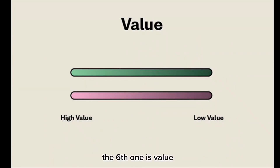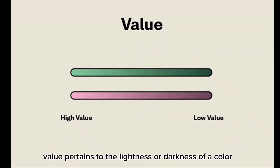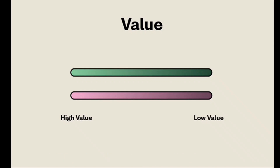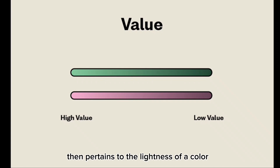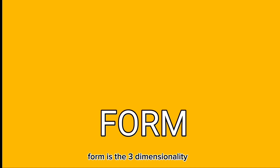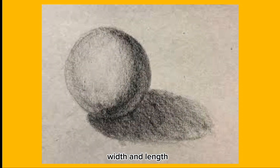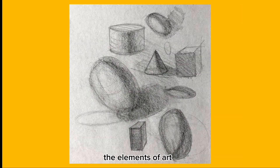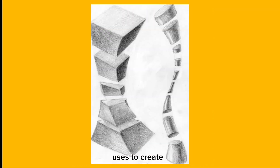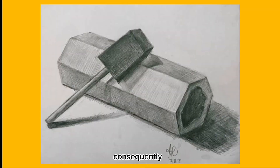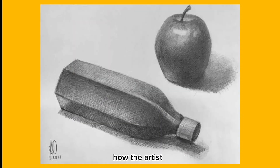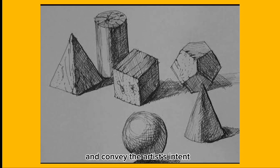The sixth element is value, which pertains to the lightness or darkness of a color in a given artwork. Value can be changed by adding white or black to a color, described as tint and shade respectively. The seventh element is form — the three-dimensionality of an object, with three dimensions of height, width, and length. According to Modern (2019), the elements of art are the visual tools the artist uses to create a composition, while principles of art represent how the artist uses these elements to convey intent.